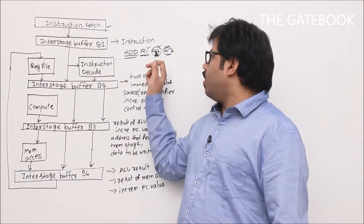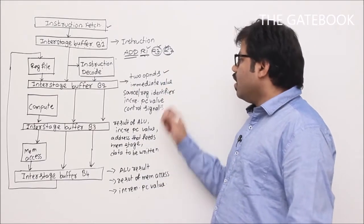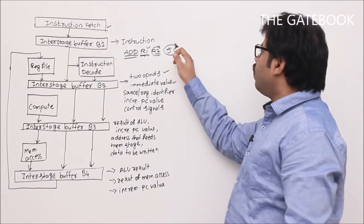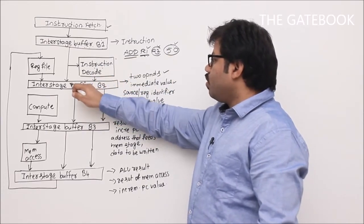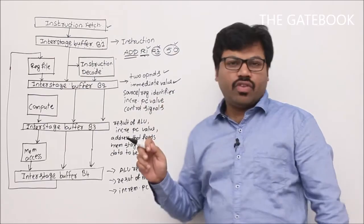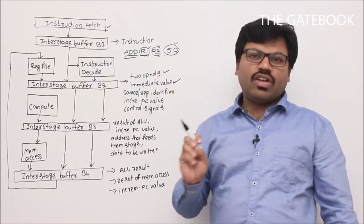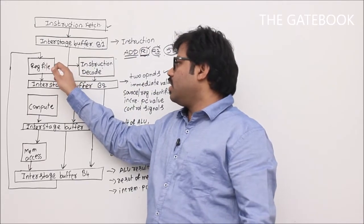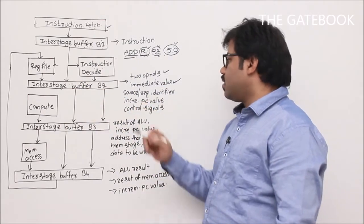Apart from generating control signals, values of R2 and R3 are read, and the address of R1 is read. Inter-stage buffer B2 contains two operands and sometimes an immediate value. For example, for the instruction ADD R1, R2, 50, the value 50 is taken from the instruction by the decode stage and pushed into B2. So buffer B2 contains two operands or an immediate value, plus the source register identifier — for example R1's address.